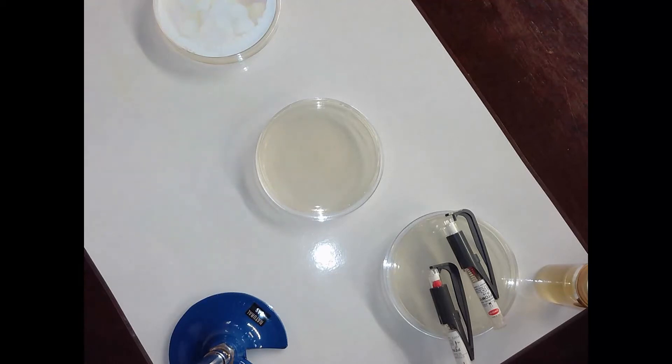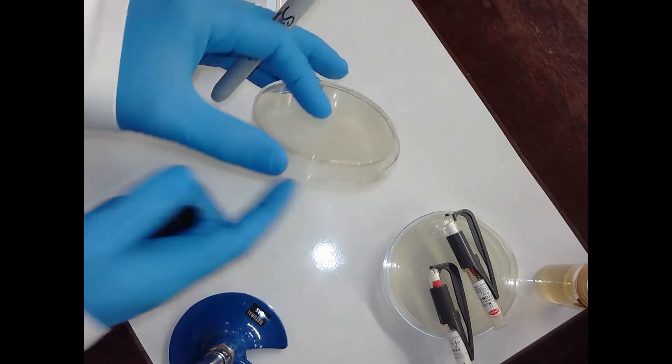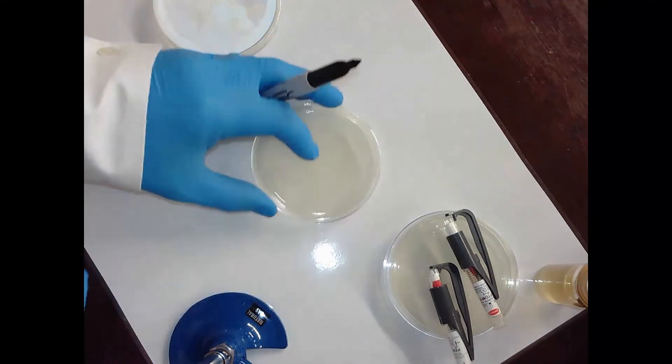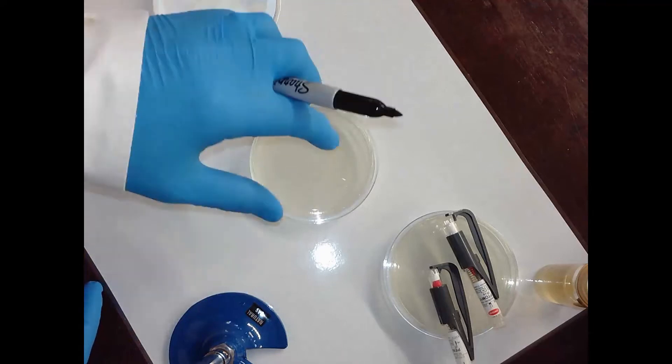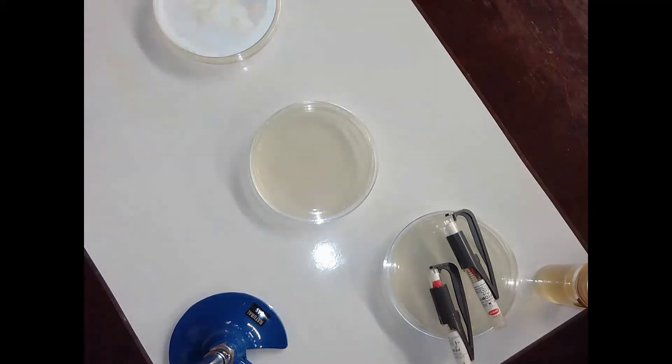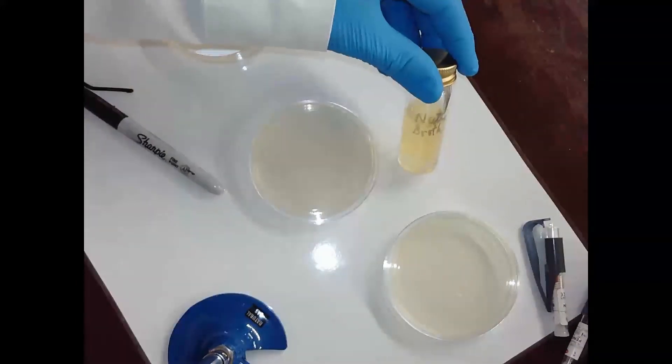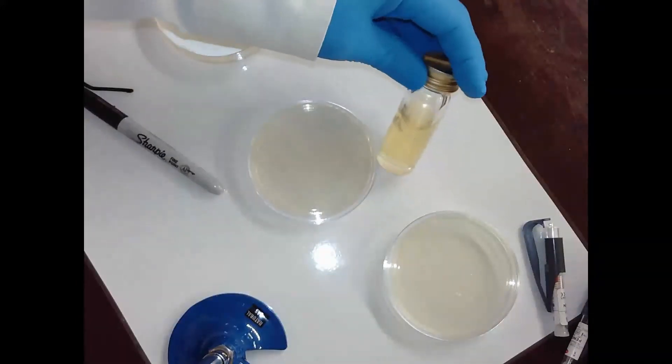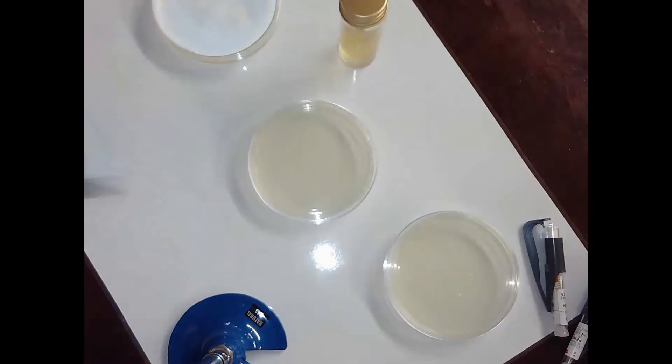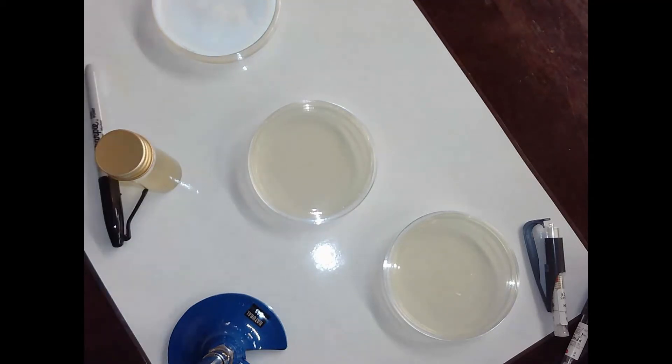I'm going to write on the base. The reason I write on the base is you never write on the lid because if I drop it the lid can come off, but if I write on the base then I'll know what I'm looking at. I'm going to spread this nutrient broth but this broth contains E. coli.